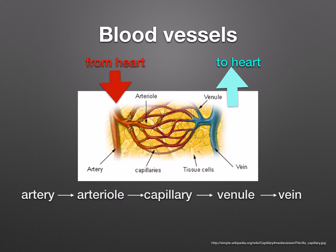Here you can see the different blood vessels. Arteries carry blood away from the heart, and smaller arteries are called arterioles. Veins carry blood towards the heart, and smaller veins are called venules. Then you've got the capillaries, which are smaller vessels that link the arteries to the veins.